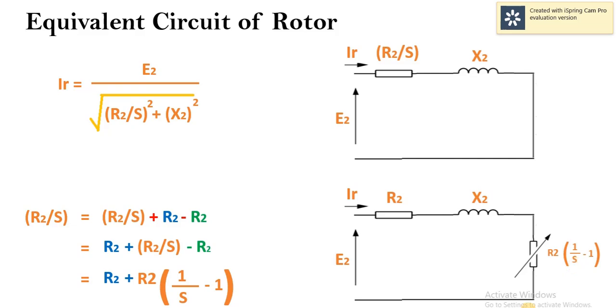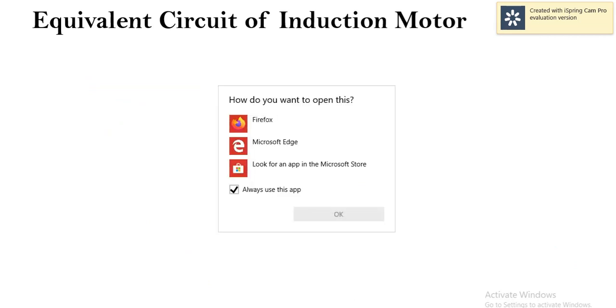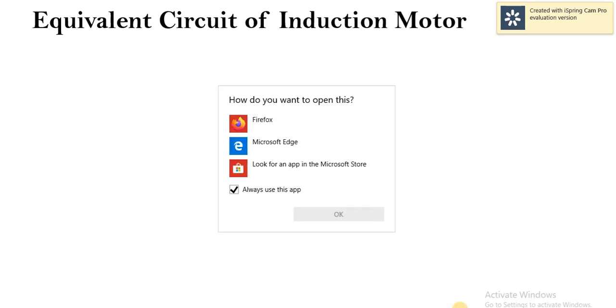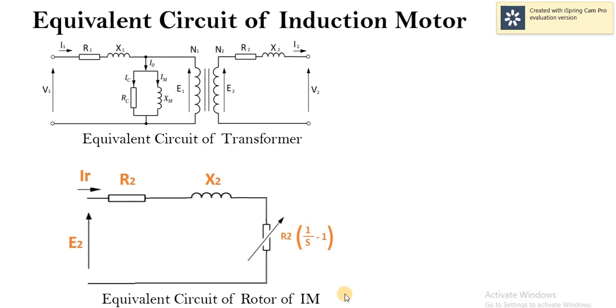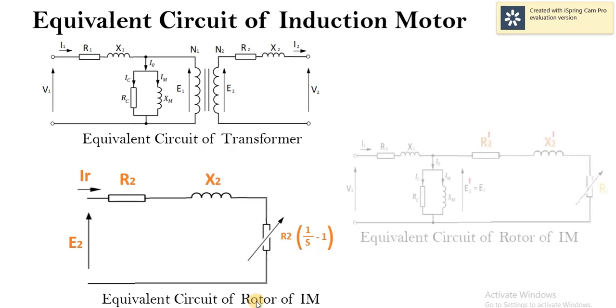As we know, the primary winding of transformer resembles the stator winding of induction motor, whereas the secondary winding of transformer resembles the rotor. Here is the equivalent circuit of transformer and this is the equivalent circuit of rotor of induction motor that we have just derived. By combining the primary side of transformer and the rotor side of induction motor, we get this equivalent circuit.